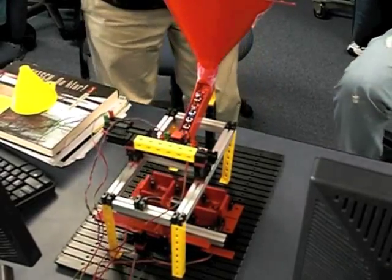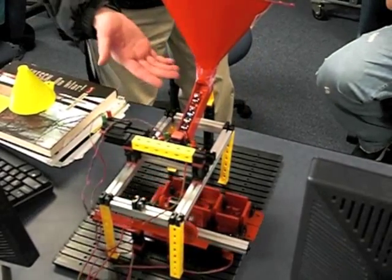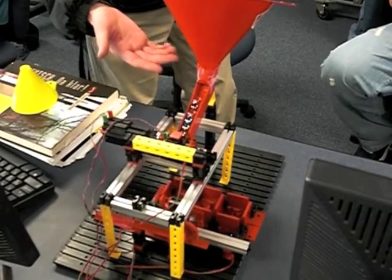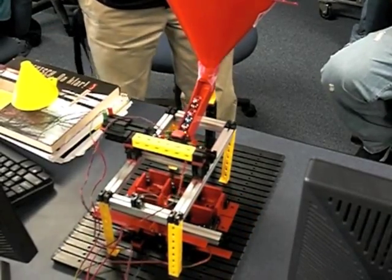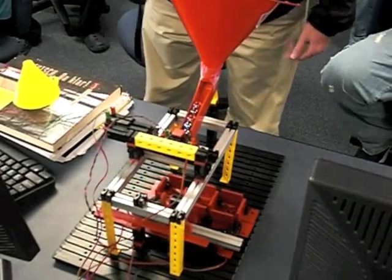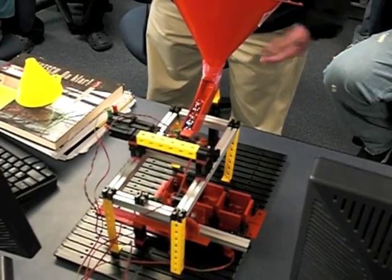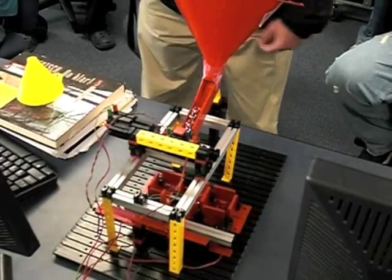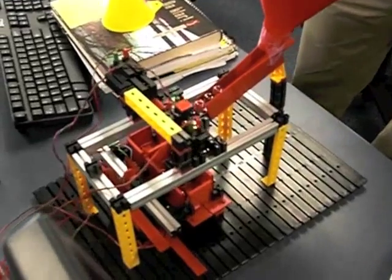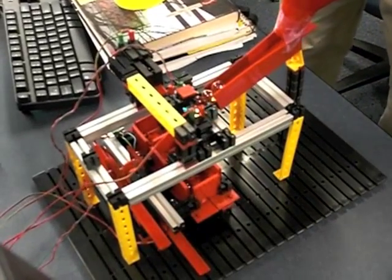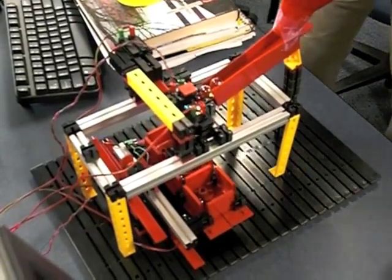The marbles are loaded through the funnel and go down a ramp, which is an incline plane, into the photo sensor. The photo sensor reads the opacity of the marble. One of the challenges we faced was getting the opacity readings correct so the photo sensor knew which color marble it was reading.